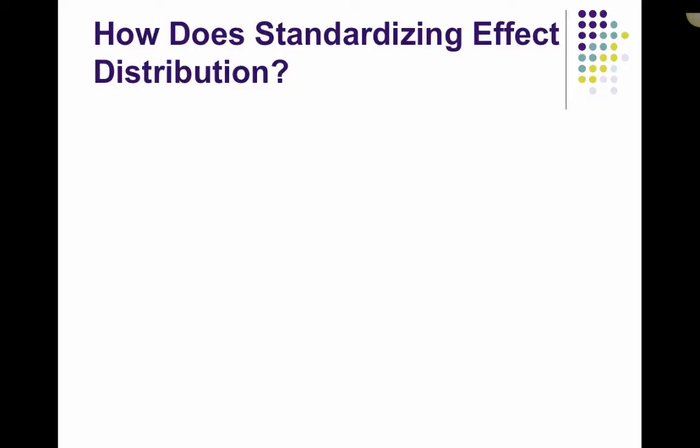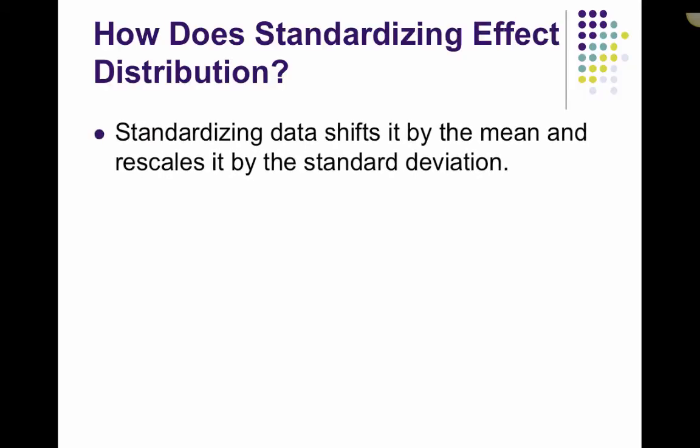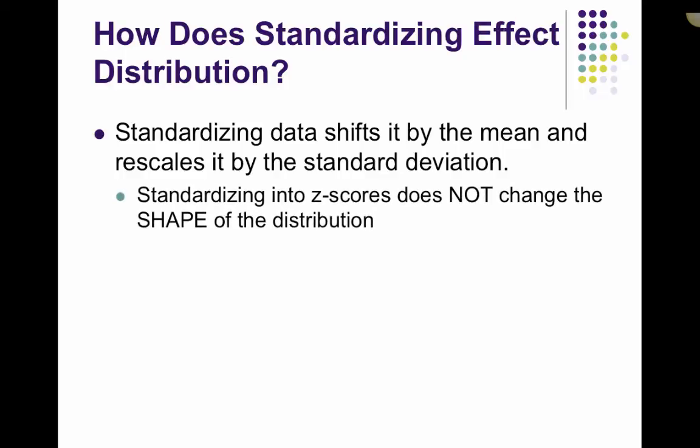So, how does standardizing affect distribution? Well, standardizing data will shift by the mean, because you are subtracting the mean, so it is going to move it down to the mean. And then it rescales it by the standard deviation, because you are dividing by the standard deviation that is rescaling. So, standardizing into z-scores does not change the shape. The shape remains the same.